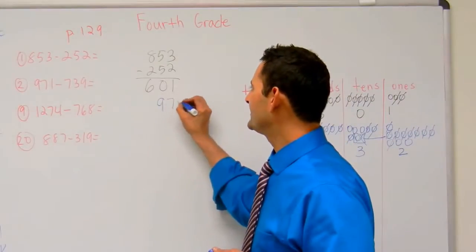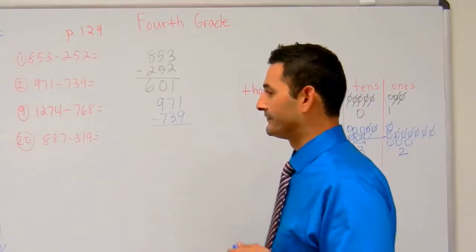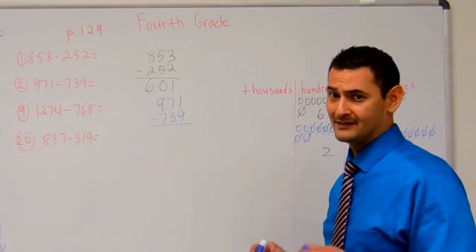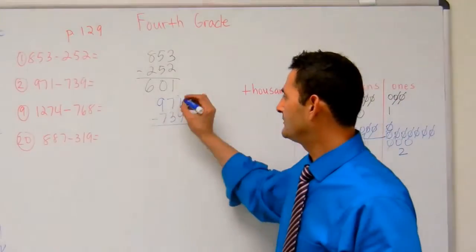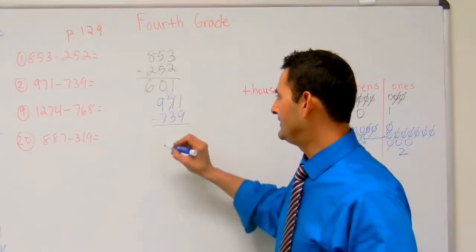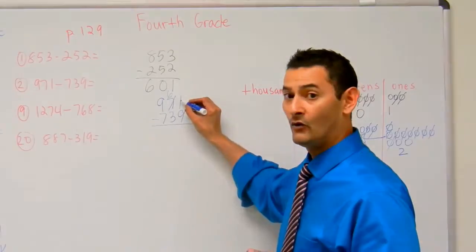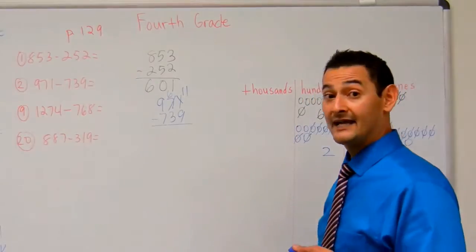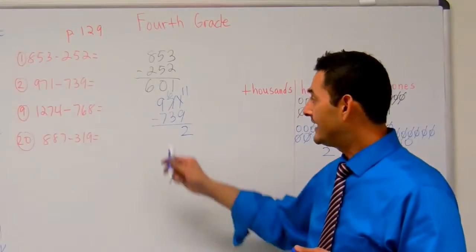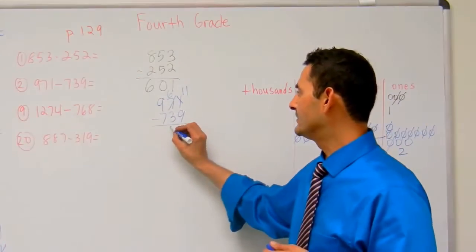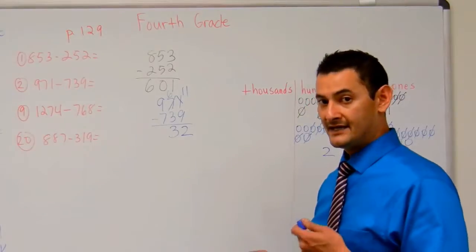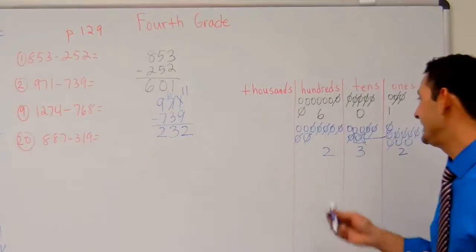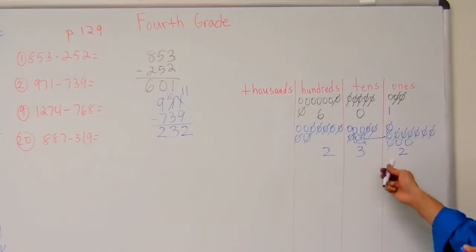I've got 971 minus 739. Here I've got one in the ones place and I have to take away nine ones — it's impossible. I've got to go to the tens place and borrow ten, so that's going to be six there. One plus ten is eleven. Eleven minus nine is two. Six minus three is three tens. Nine minus seven is two hundreds. So the answer is 232.